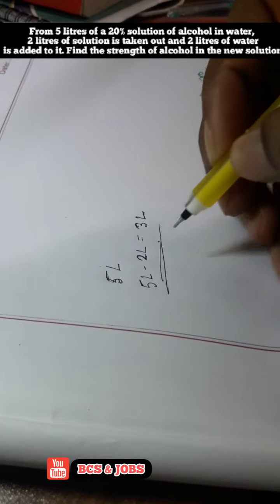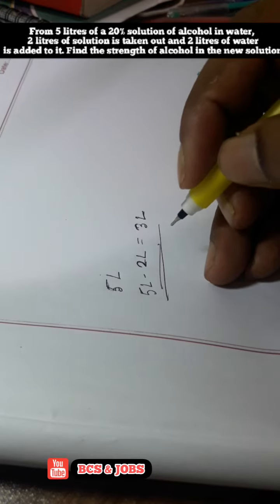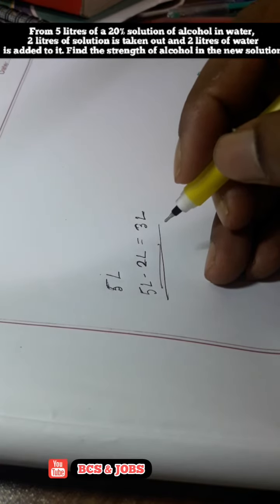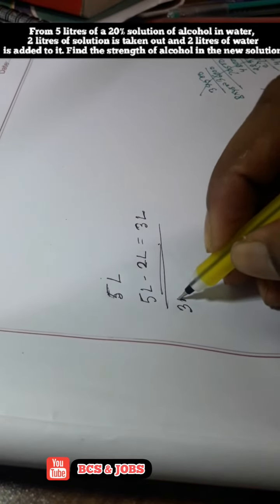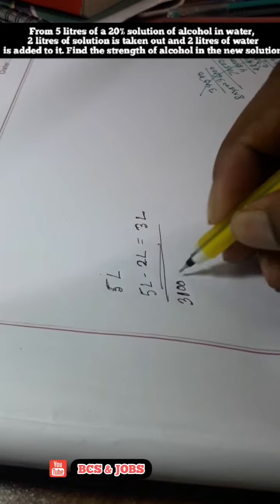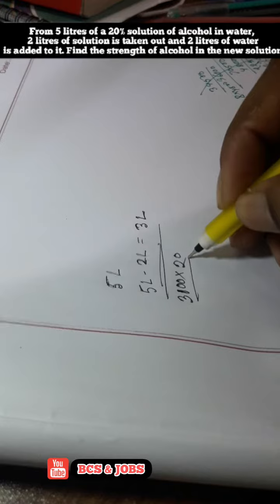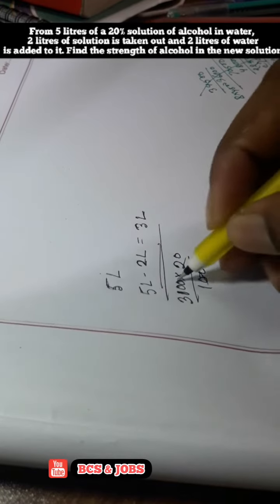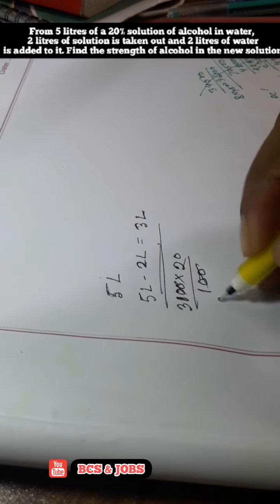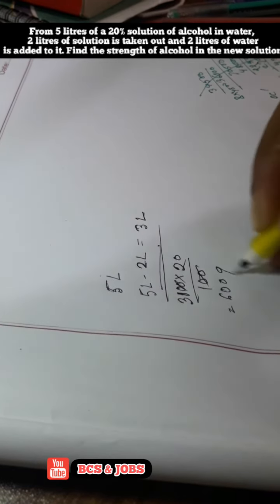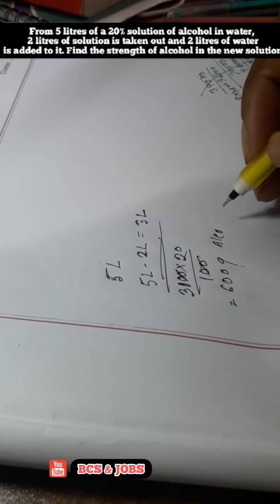The main thing is the 20% alcohol. So 20% of 5 liters means if we take 5000 grams total, 20 per 100 grams gives us 1000 grams. When 2 liters is taken out, that's 2000 grams removed, leaving 3000 grams with 600 grams alcohol. Then 2 liters of water is added.